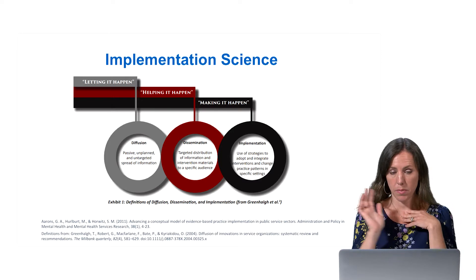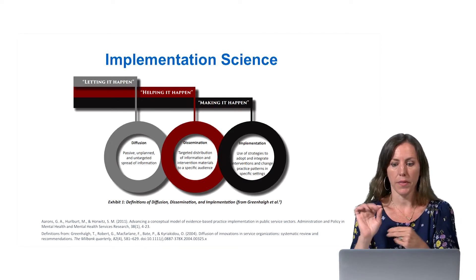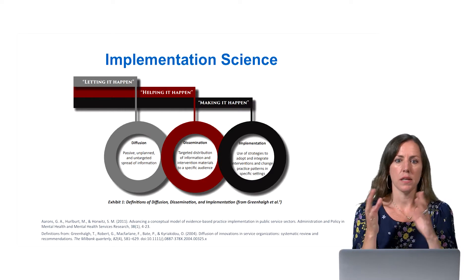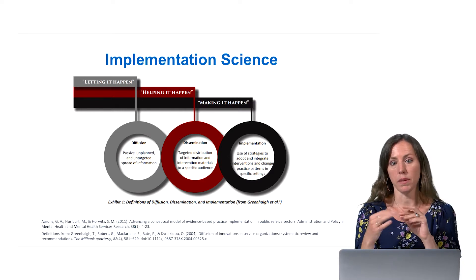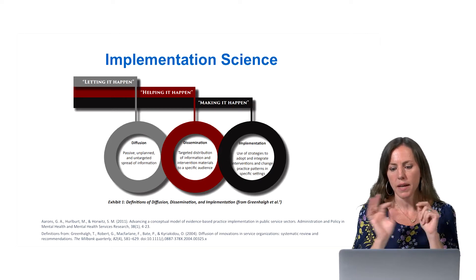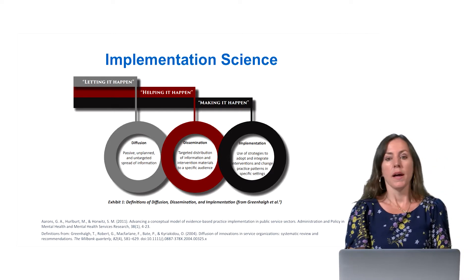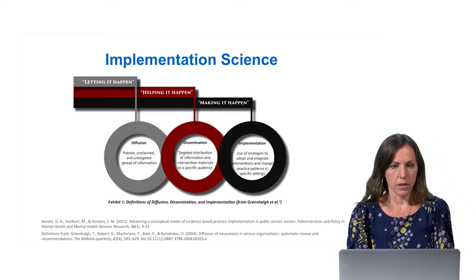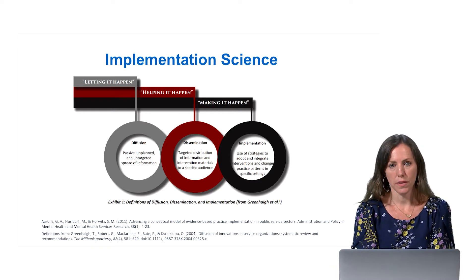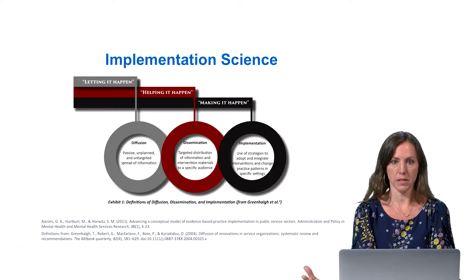We have our school system example — making sure that all the New York City principals know about this new HIV intervention and that we're actively testing specific messages or strategies to encourage that adoption. And then implementation is about that active approach: once they've agreed to adopt it, what are the strategies to actually ensure that they can integrate and actually deliver what the intervention is?